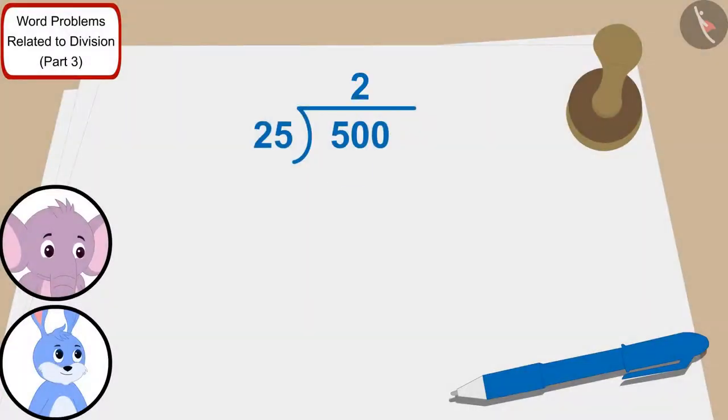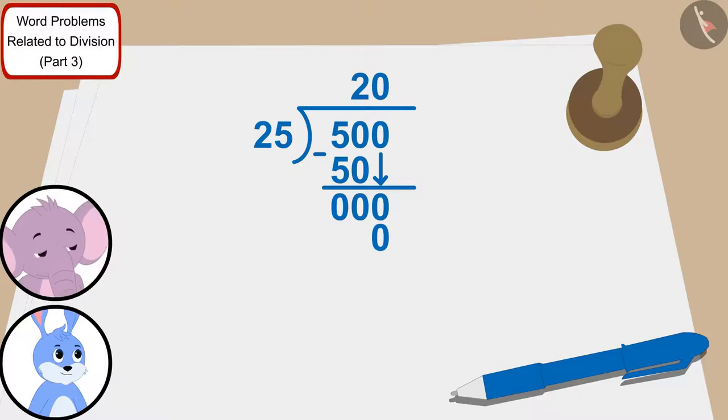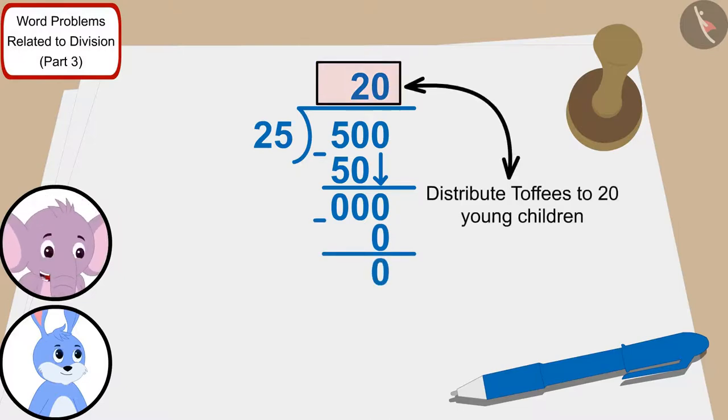So, Appu quickly divided 500 by 25. Bunni, we will be able to distribute toffees to 20 young children. Appu told Bunni.